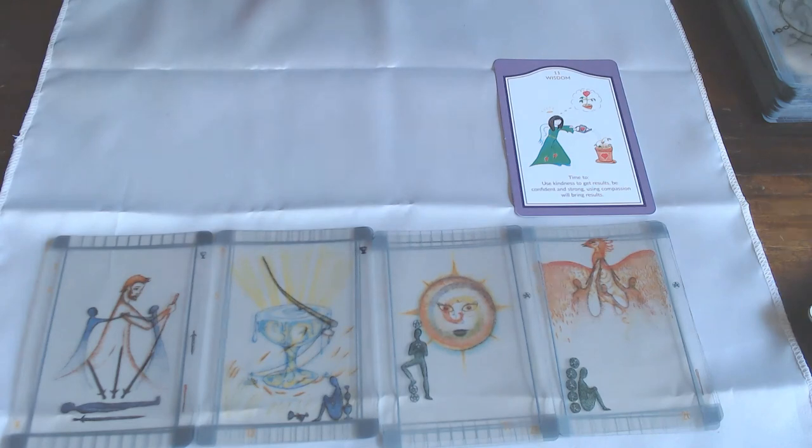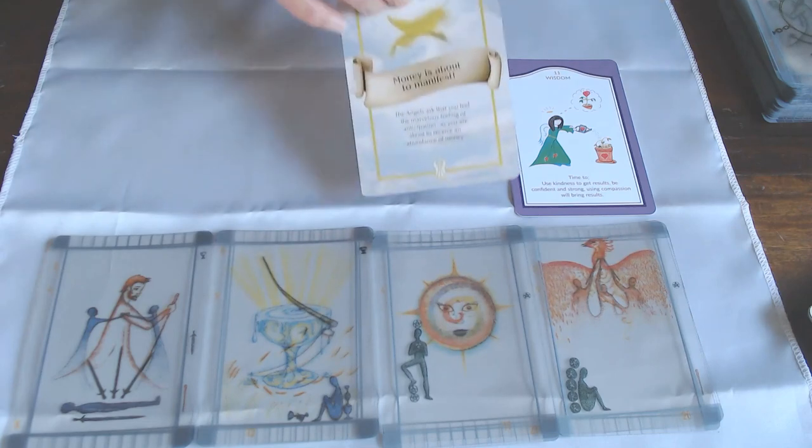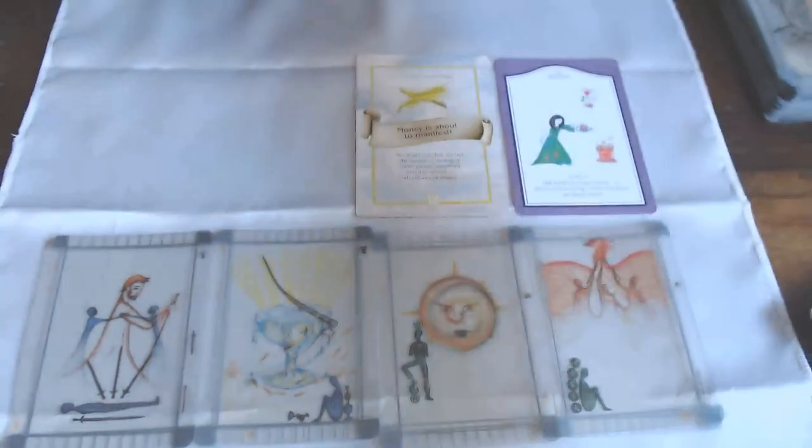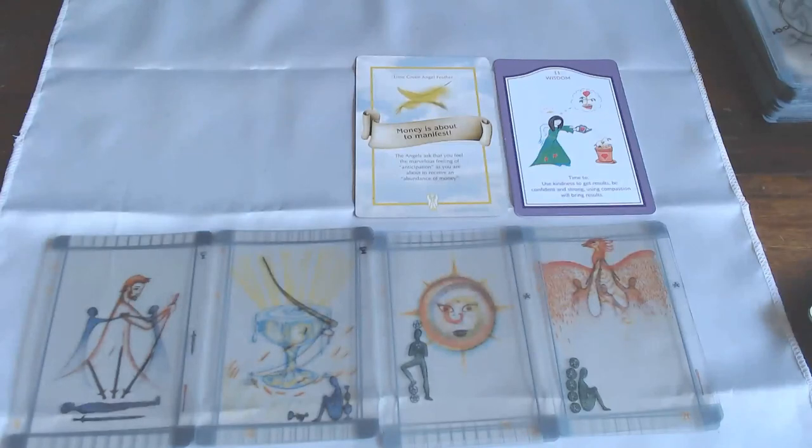You're going to rise from the ashes, even if this is business, work, or relationship. Money is about to manifest. The angels ask that you feel the marvelous feeling of anticipation as you are about to receive an abundance of money. There you go. Beautiful. You are going from a four to a five, so that's also showing that there is going to be more.